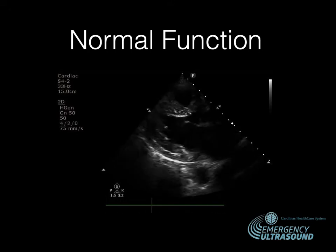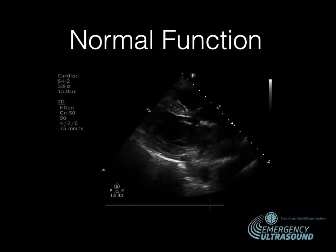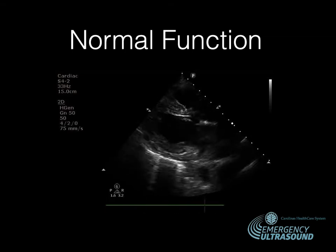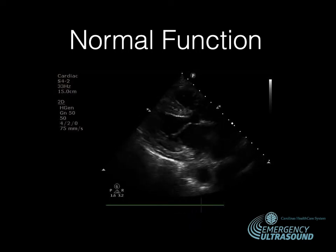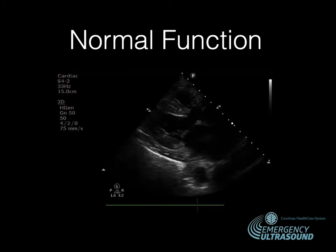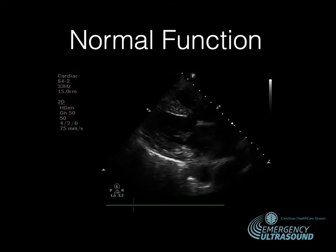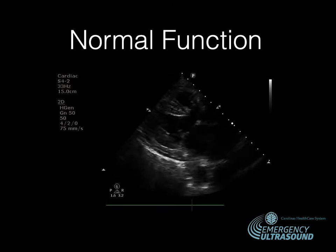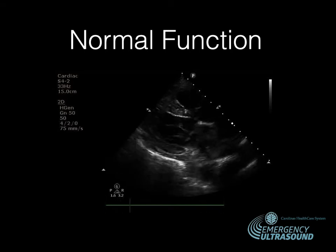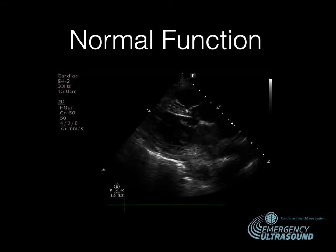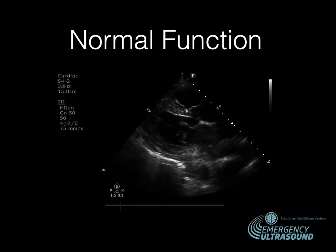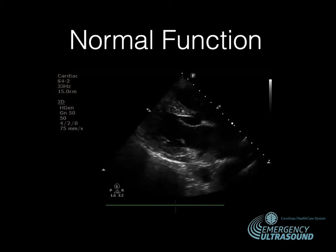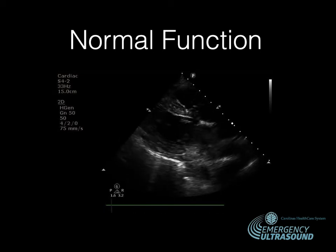Here we see a totally normal functioning heart in the parasternal long axis. We look first at the E-point septal separation. The anterior leaflet of the mitral valve — its tip should come up and really hit the interventricular septum, opening and closing with each beat. When heart function decreases or heart failure develops, that valve doesn't come all the way up to the interventricular septum. We can measure this using M-mode; an E-point septal separation of seven millimeters or greater is associated with poor function.